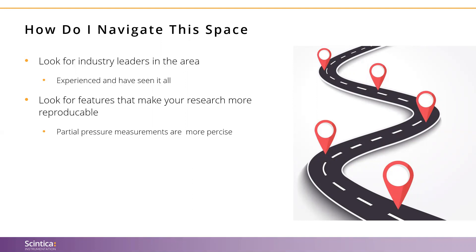More focused on individual products: look for features that are going to make your research more reproducible. Just choosing to work under physiologically relevant conditions is an excellent step. But to take this one step further, it is worth looking into systems that take measurements using partial pressures as opposed to percentages, as partial pressures are more precise day to day and location to location because they account for changes in atmospheric conditions. For example, if a large storm rolled in that changed barometric pressure by 5%, cells in a system reading percentage would be off by 5%, but cells using partial pressure would remain at the exact same oxygen condition.